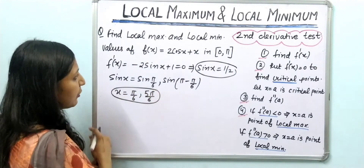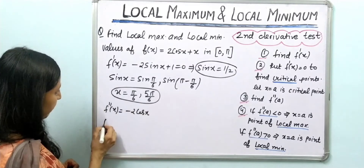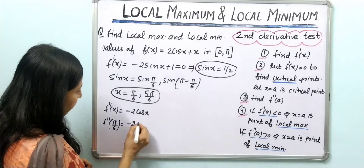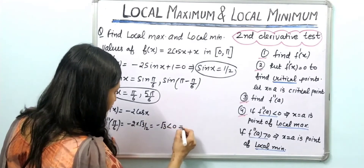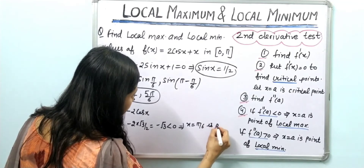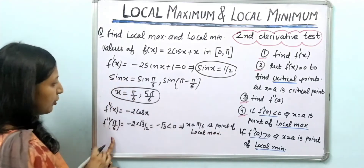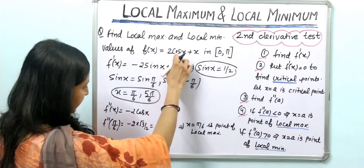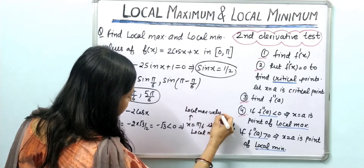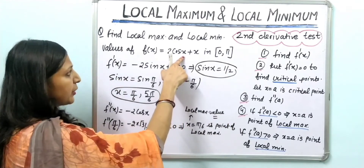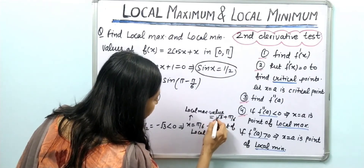Now finding the second derivative: f''(x) = -2 cos x. At x = π/6: f''(π/6) = -2 cos(30°) = -2(√3/2) = -√3, which is less than 0. So x = π/6 is a point of local maximum. The local maximum value is f(π/6) = 2cos(π/6) + π/6 = 2(√3/2) + π/6 = √3 + π/6.